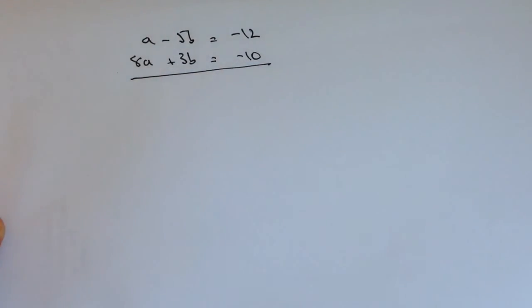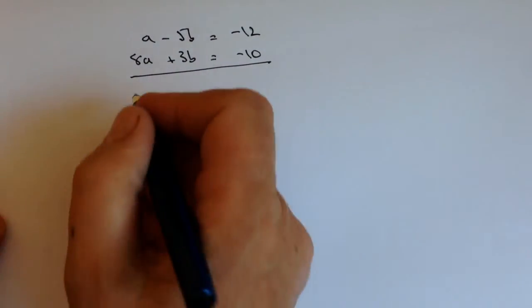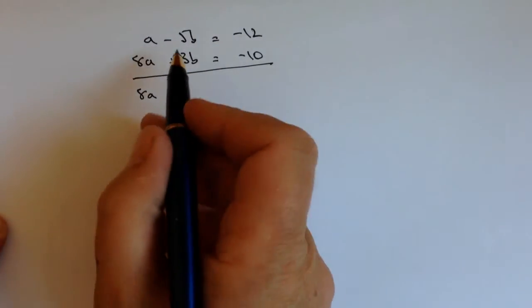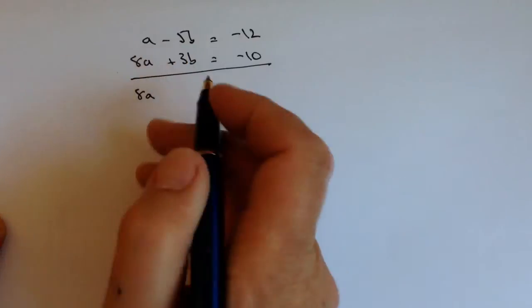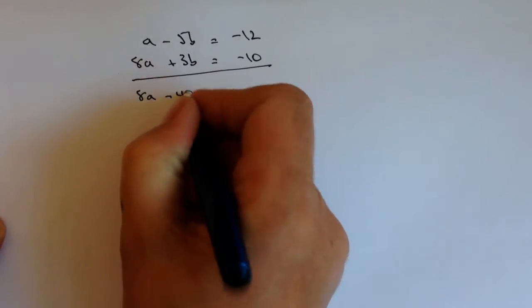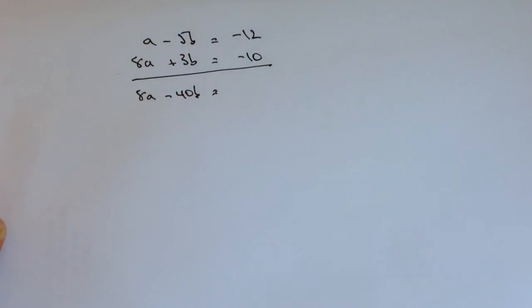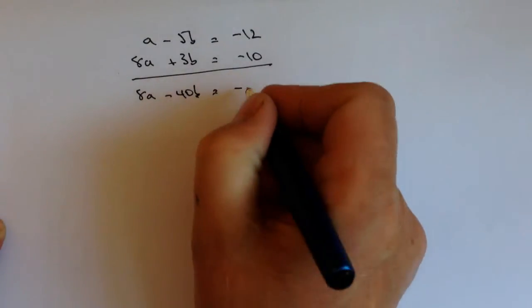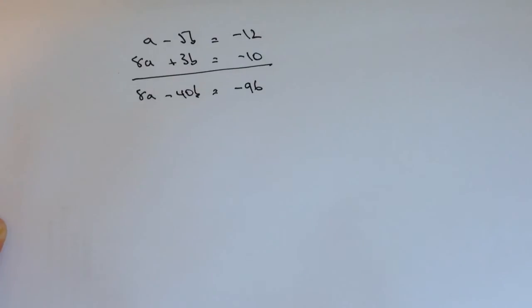Okay, so the first equation I'm going to multiply by 8. That's going to give me 8a, and then I'm going to get 8 times -5, which is going to be -40b, and that's going to be equal to 8 times -12, which is -96. I hope you can see this okay.